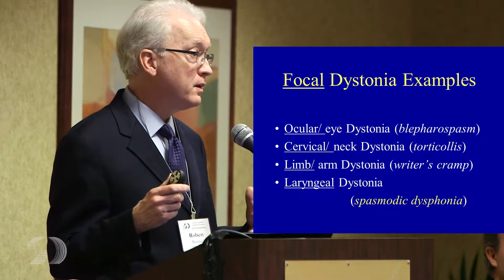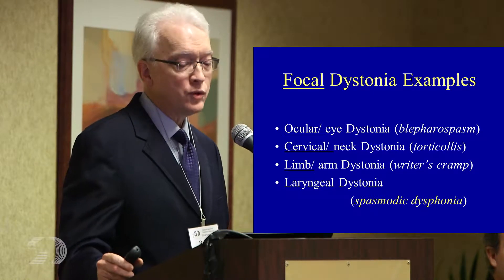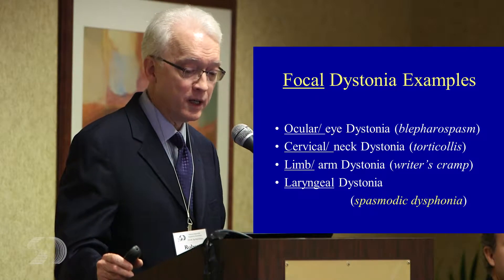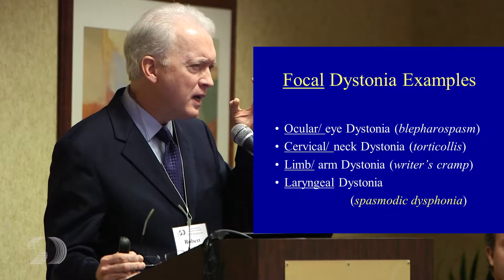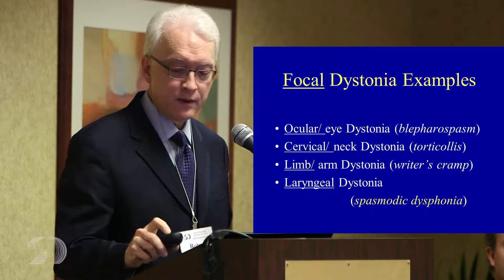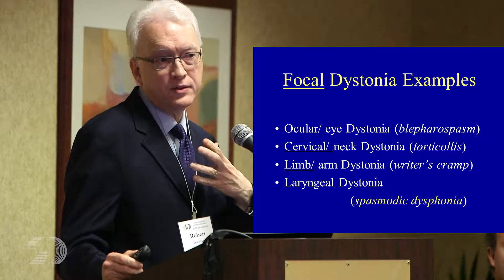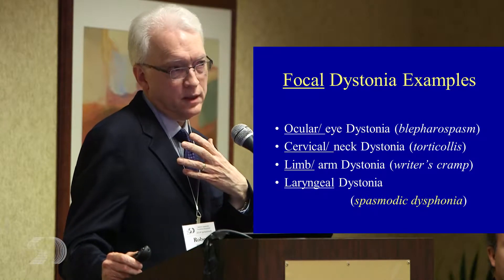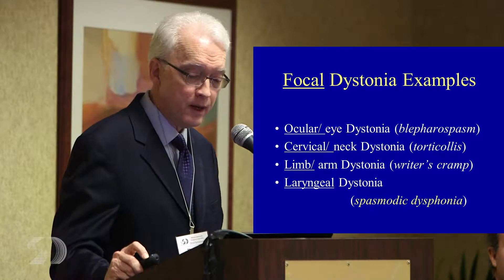Focal dystonia examples help illustrate what's happening in the larynx. Ocular dystonia, often called blepharospasm, has two main variants: a squint, which is the more sustained kind, and the intermittent form where you see a lot of blinking. Cervical neck dystonia can involve a sustained postural abnormality, like this, or a variant with a lot of continuous movements. There's a tonic and a classic variant of cervical dystonia as well.